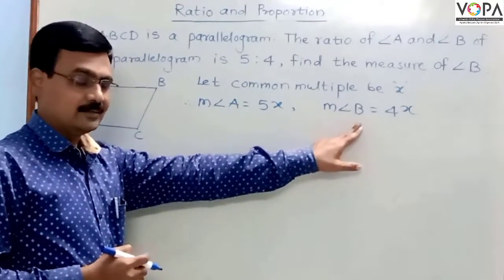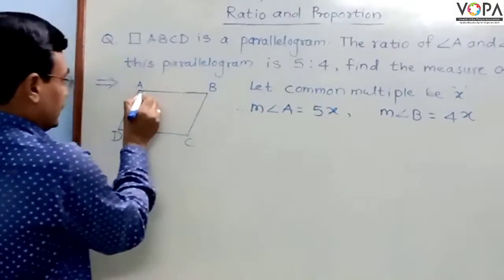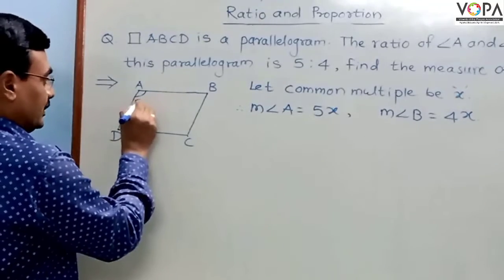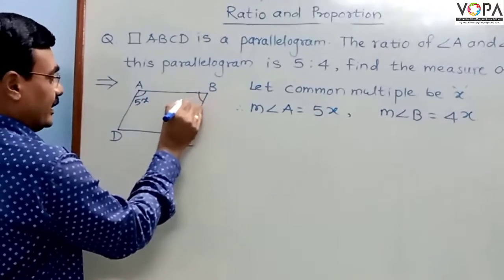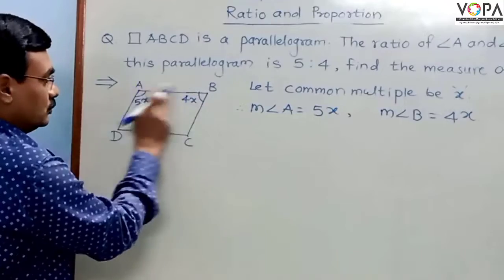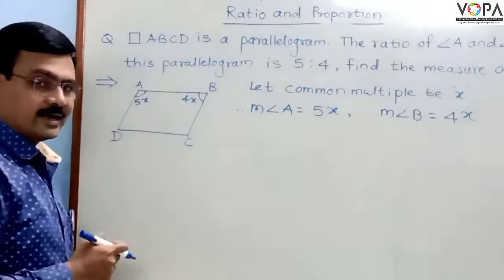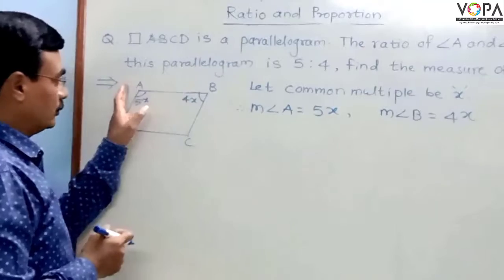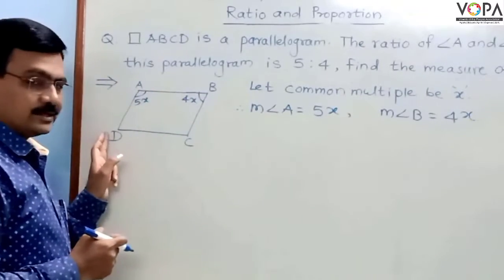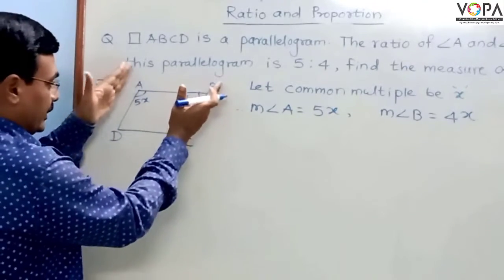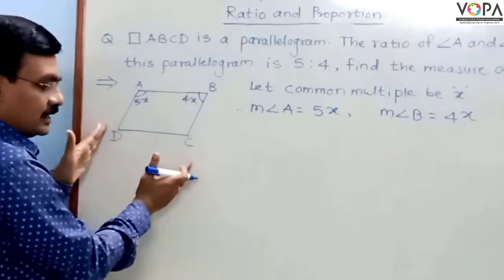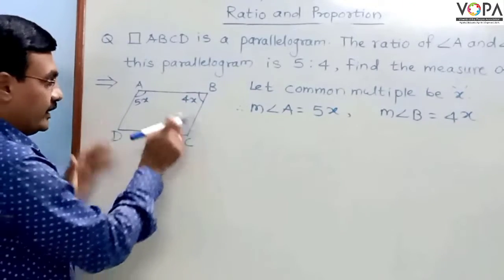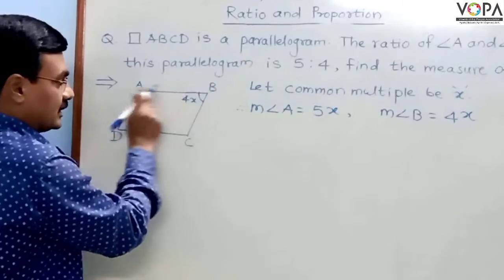Let us represent those angles in that diagram: 5x and 4x. These are the two required angles, angle A and angle B, whose ratio is given. If you look at that diagram, it is a parallelogram. Side AD and side BC are parallel to each other. And if you consider AB as a transversal, then these two angles form an interior pair of angles.